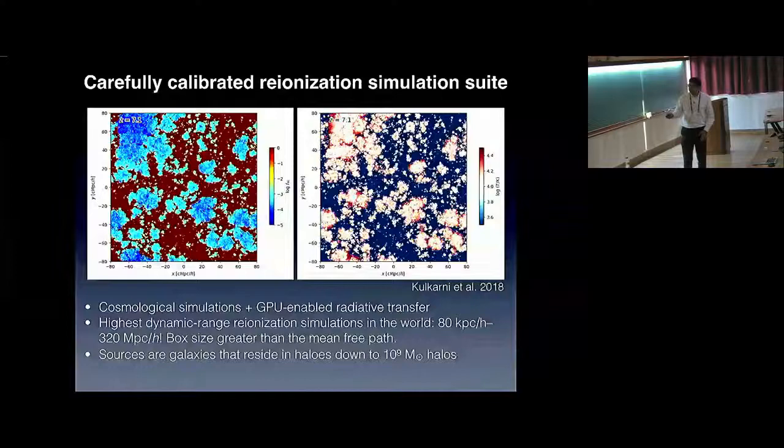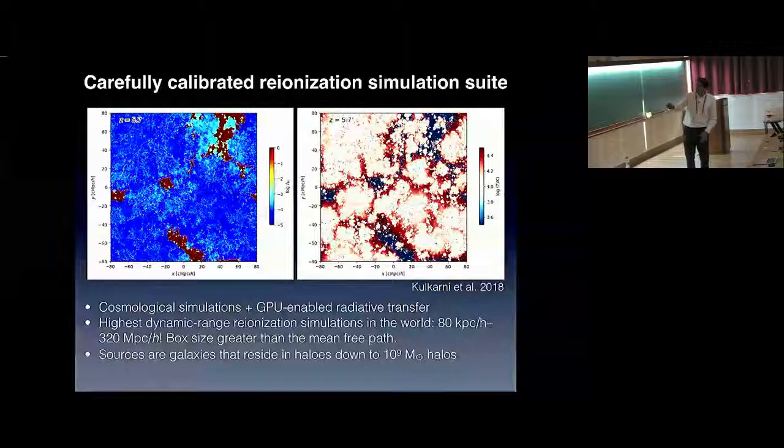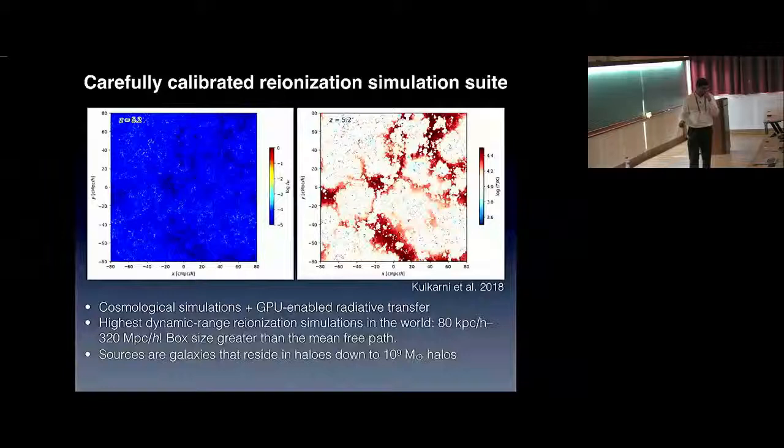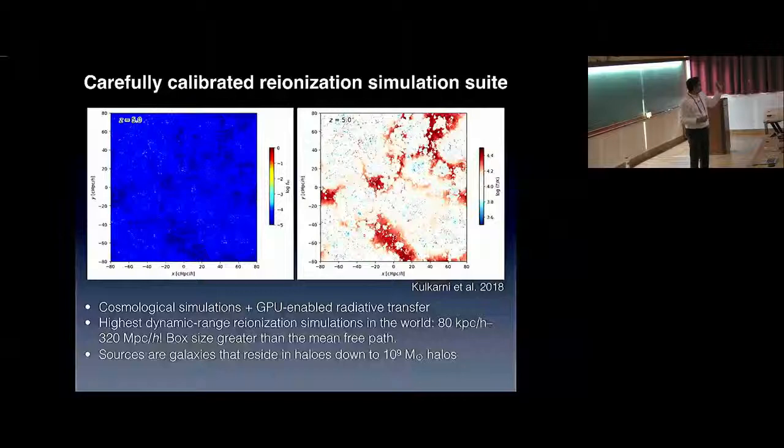This is a video of how reionization occurs in one of these simulations, where this panel shows the evolution of the ionized—sorry, the neutral fraction—and here it shows the temperature. I'll come back to something interesting about these panels soon. This is just to show you how these simulations look like, and also to note another quick thing, which is that the bubble size at the beginning of the reionization process were very small, which is to say that reionization here is initiated by galaxies, not by quasars.